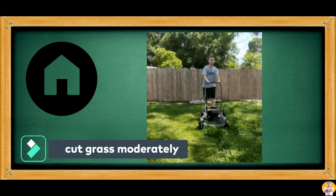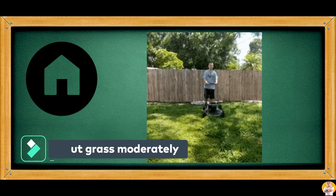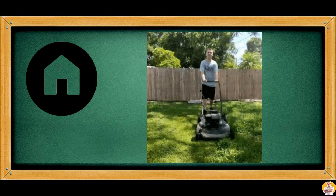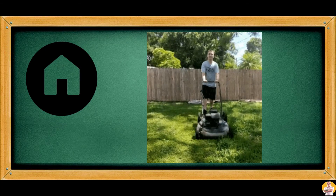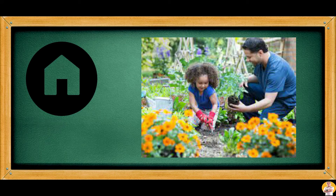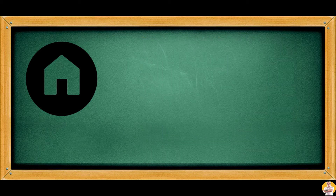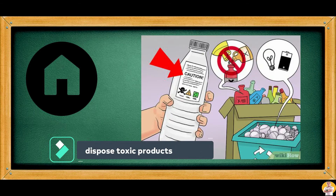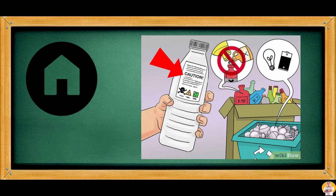Cut grass moderately. A little height can make the roots grow deeper and may lessen erosion. Grow plants in your garden. Choose plants that are native to your area so that they would need less water and fertilizer. Dispose of toxic products properly, as improper disposal may pollute coastal rivers and estuaries.